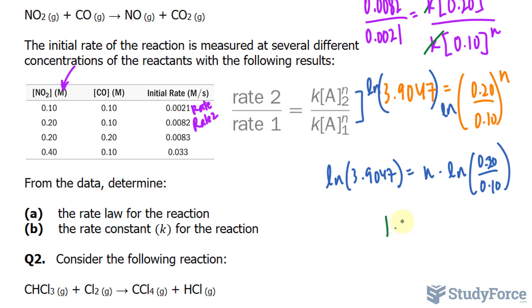1.965 is equal to n. We can round this up to an integer as 2. This number tells us that the reaction is a second-order reaction in NO2.